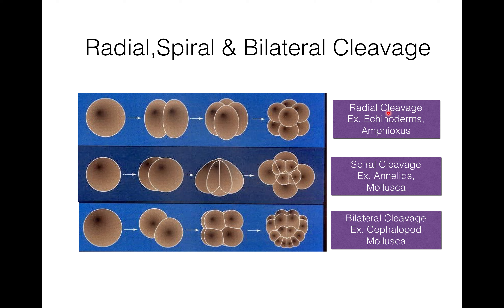In spiral cleavage, the cleavage furrow passes obliquely. The four blastomeres of the lower tier rotate either clockwise or anticlockwise. If the rotation is clockwise, it is called dextral spiral cleavage, present in molluscs. If the rotation of the lower tier blastomeres is anticlockwise, it is called sinistral spiral cleavage, present in helminths and annelids.